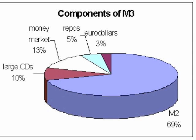M3 is an even broader definition of the money supply. It includes all the components of M2, plus a number of financial assets and instruments generally employed by large businesses and financial institutions.